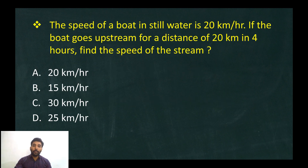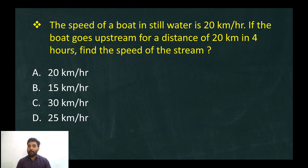The speed of a boat in still water is 20 km per hour. If the boat goes upstream for a distance of 20 km in 4 hours, find the speed of the stream.